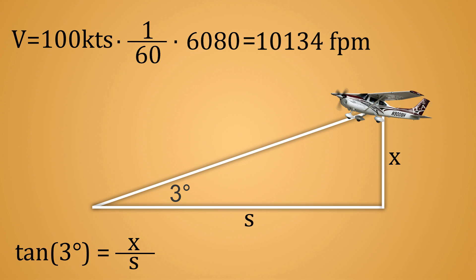Now that we know how much ground we cover in one minute, we can calculate how much altitude we need to lose in one minute as well. If we go back to our formula and multiply it by s, we will see that x equals s times the tangent of three degrees. Remember that s was the distance in feet we traveled in one minute, so if we multiply that distance with the tangent of three degrees, we will get the altitude we need to lose to stay on the path of three degrees, which now happens to be the rate of descent in feet per minute, 531 feet per minute.